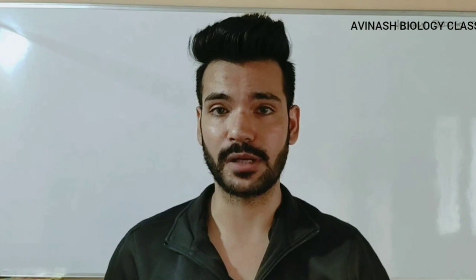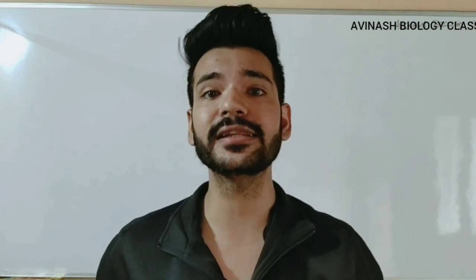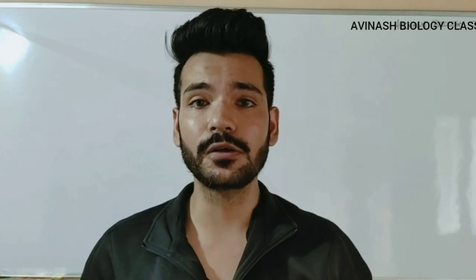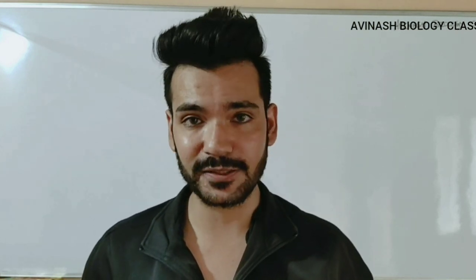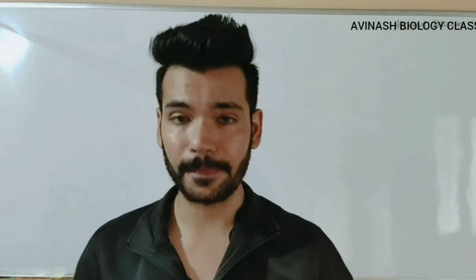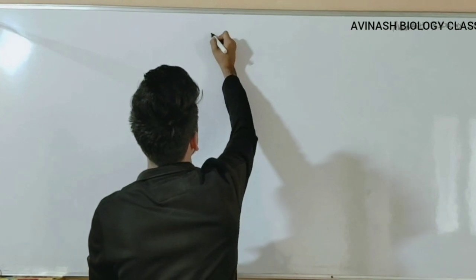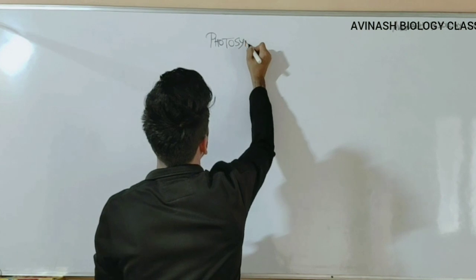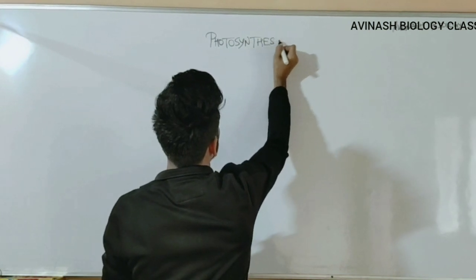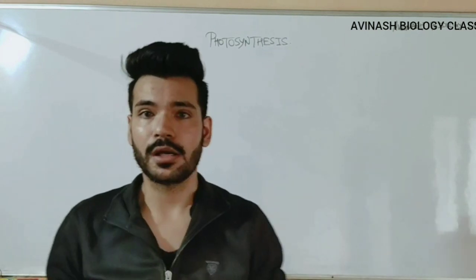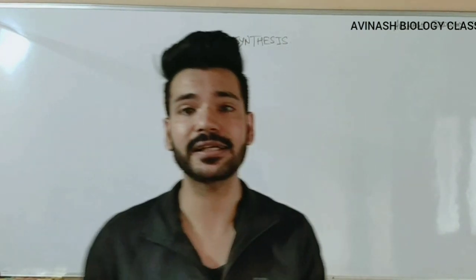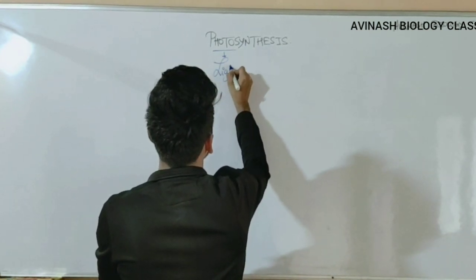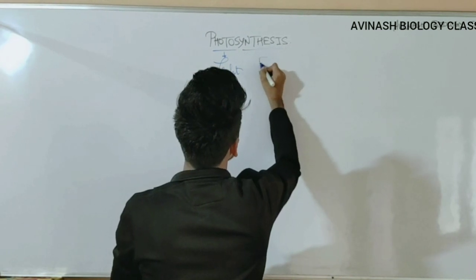Photosynthesis दो terms से मिलकर बना है: photo, that means light, and synthesis, that means formation. Photosynthesis के लिए light essential होती है और यहाँ glucose का formation यानि synthesis हो रहा है, इसलिए हम इसे photosynthesis बोलते हैं।